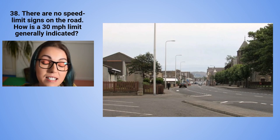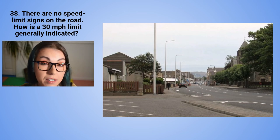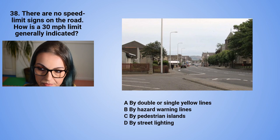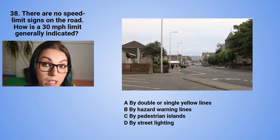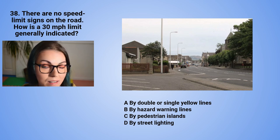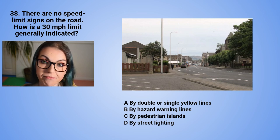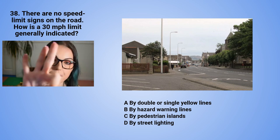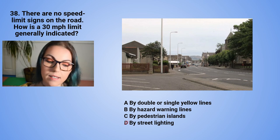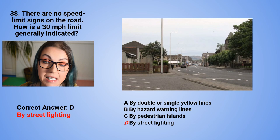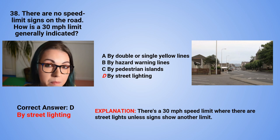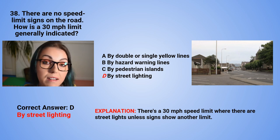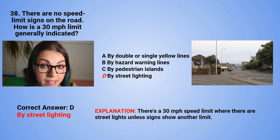Question 38: There are no speed limit signs on the road. How is a 30 mph limit generally indicated? A. By double or single yellow lines. B. By hazard warning lights. C. By pedestrian islands. Or D. By street lighting. The correct answer is D — by street lighting. There is a 30 mph speed limit where there are street lights, unless signs show another limit.